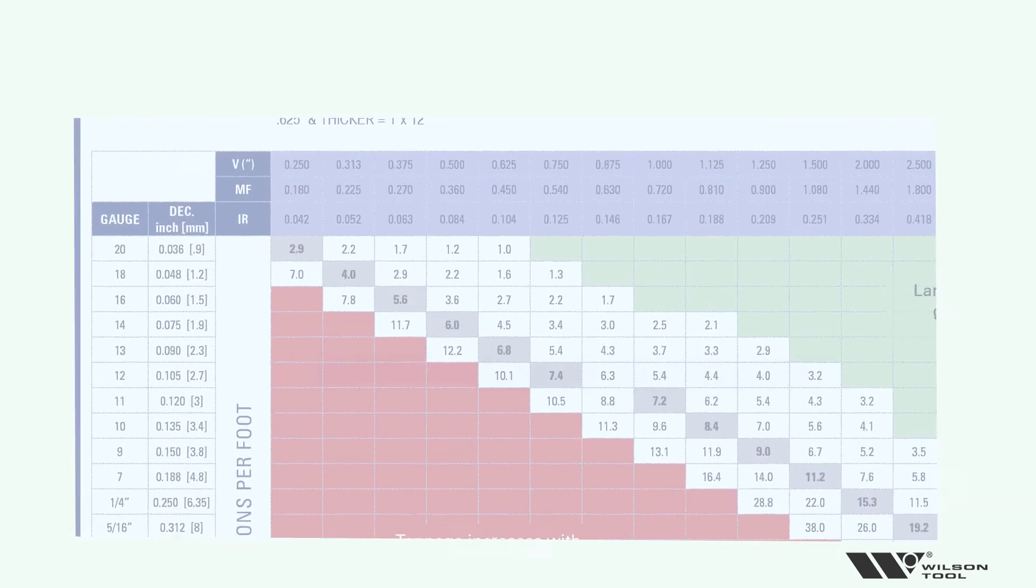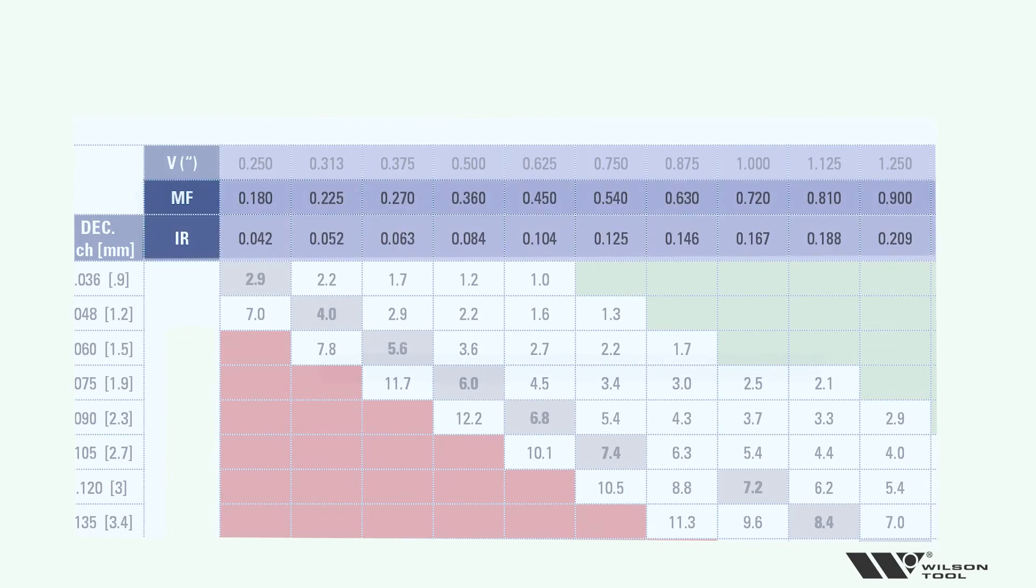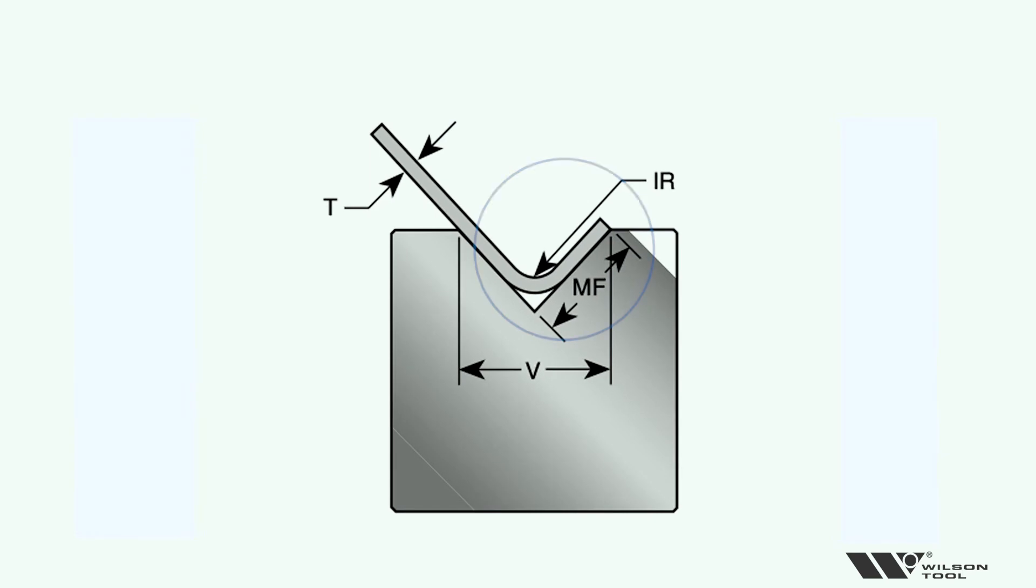Our final two pieces of information on this chart would be the minimum flange required and the inside radius produced. So let's take a look at inside radius first. We can see that each V opening produces an inside radius as we look at the chart. The inside radius is being called out in the upper right hand corner to show you it's an inside not an outside radius.